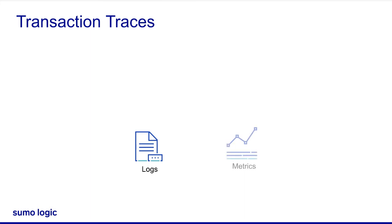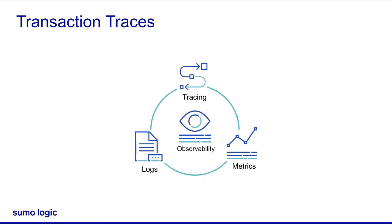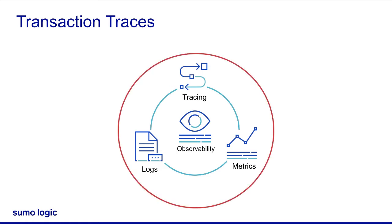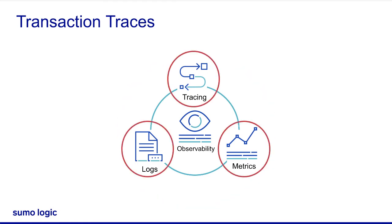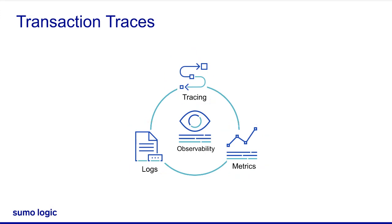In fact, logs, metrics, and traces are the three pillars of the observability system. They're complementary to each other and need to be together in a single platform. Together they can offer more in a single product than in three separate products. We at Sumo Logic are doing a great job blending them together in a single UI.